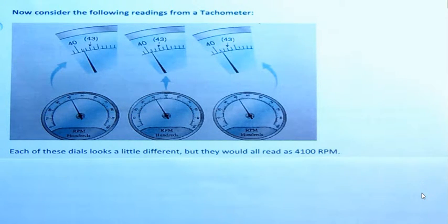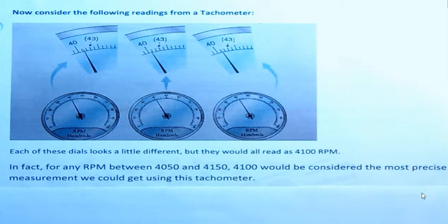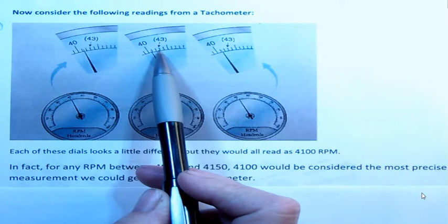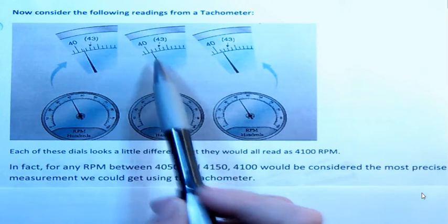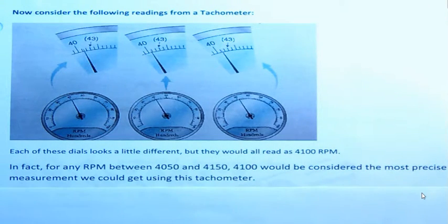Notice this is the 4100 mark and this one's a little bit above it. This one's a little below it. This one's pretty much on it but they would all be read as that. In fact, if somebody told you that there was 4100 RPMs, you wouldn't really know. And by the way, these are hundreds and not thousands. That's why I'm saying hundreds on these. In fact, the RPM is anywhere between 4050 and 4150. Anything between there we would say is about 4100. 4100 would be the most precise measurement we could get using this tachometer because it's marked off in hundreds. Okay, and so we can't go any more precise than that because we don't know. We can only be as precise as the instrument that we're using. That's what I want to say.